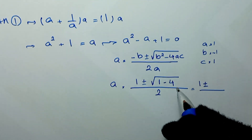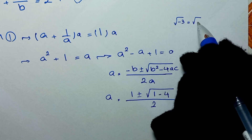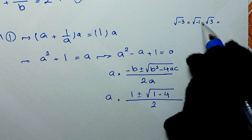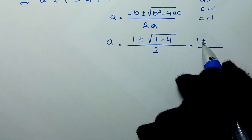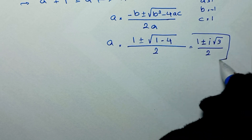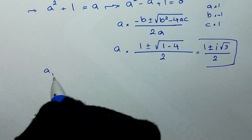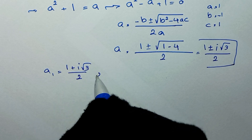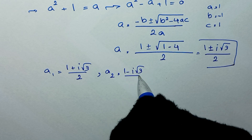We can write square root of negative three as square root of negative one times square root of three, and since square root of negative one is i, this becomes i square root of three. So a equals one plus or minus i square root of three, over two. We get two values: a₁ equals one plus i square root of three over two, and a₂ equals one minus i square root of three over two.